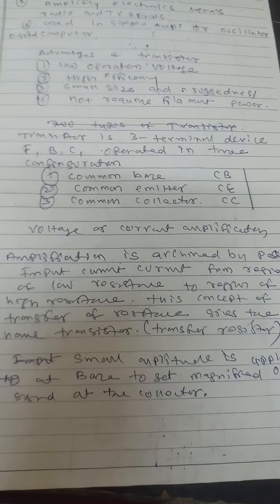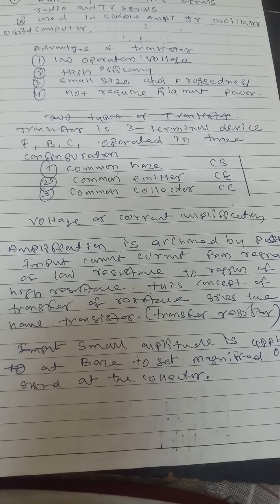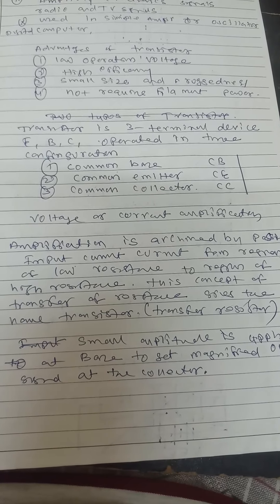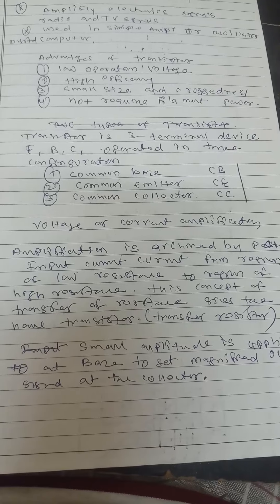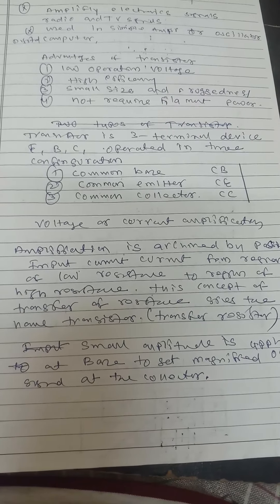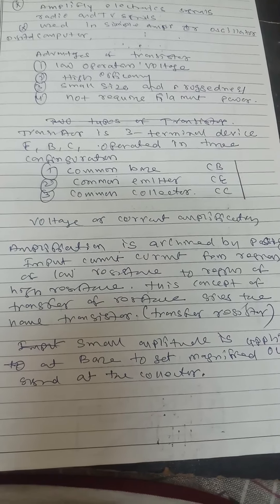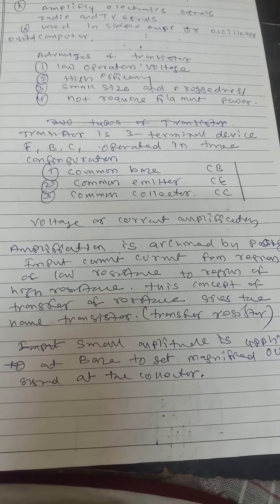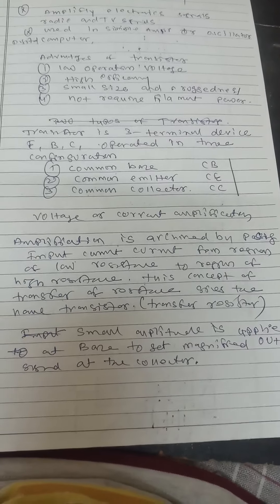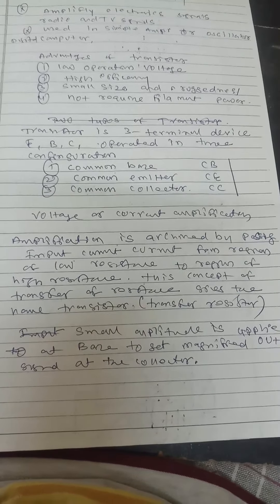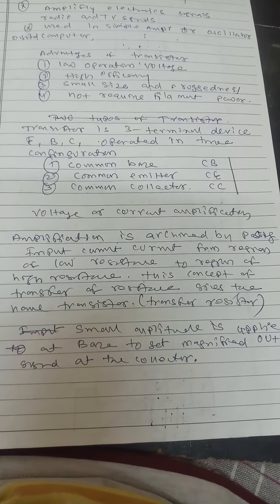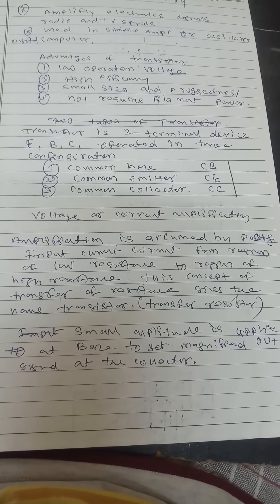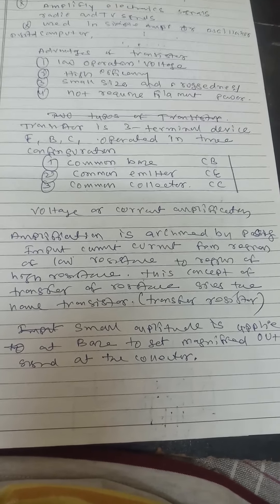Welcome back. Let us see how the transistor operates in three configurations: common base, common emitter, and common collector. Voltage or current amplification is achieved by passing the input current from a region of low resistance to a region of high resistance. This concept of transfer of resistance gives the name 'transfer resistor.'